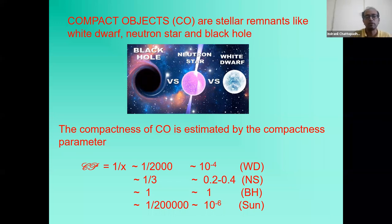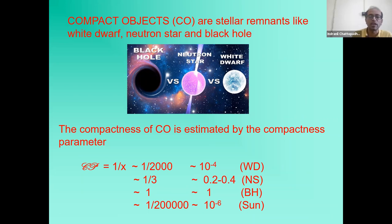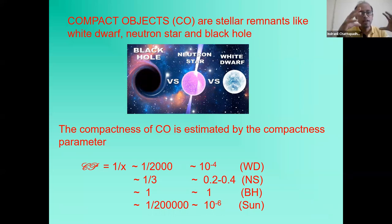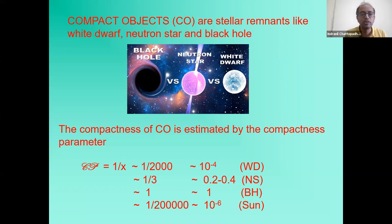If we express the size of the object in units of the Schwarzschild radius, the compactness parameter is just 1/x, where x is the size in Schwarzschild radii. For white dwarfs, this is around 10⁻⁴; for neutron stars, 0.2 to 0.4; and for black holes, around 1. The Sun, by comparison, is around 10⁻⁶ — much less compact.